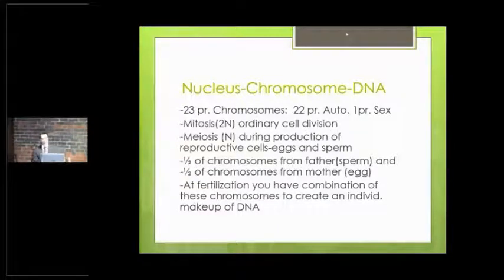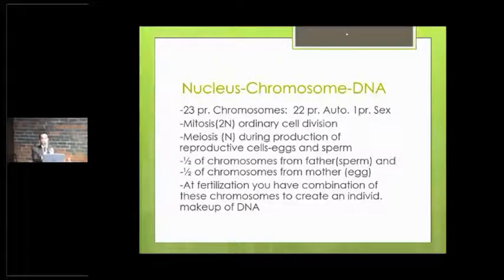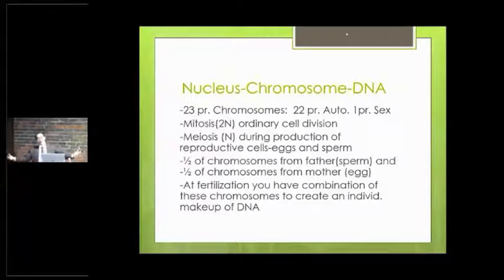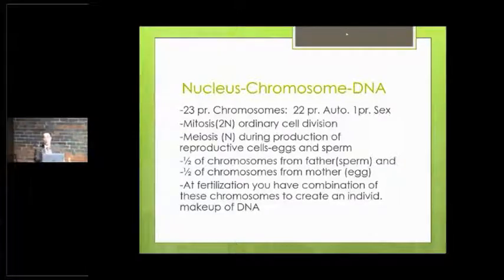These next two slides give you an analogy. You've got 23 pairs of chromosomes: 22 are called autosomal, and one pair is your sex chromosomes. If you're female you're XX; if you're male you're XY. During meiosis, when eggs and sperm come together at fertilization, you get half your DNA from your mom's egg and half from your father's sperm — that combination makes you the person you are. Barring identical twins, everyone's DNA should be unique to them. There are actually some minor differences now even between identical twins, but for the most part, with our current technology, only identical twins would have the same DNA.